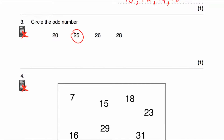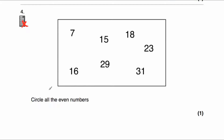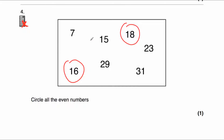Question number four says: circle all the even numbers. We've got this box with the numbers 7, 16, 15, 29, 28, 23, and 31. We've been asked to circle all the even numbers — the numbers that end in either a 0, 2, 4, 6, or 8. So 16 is even, it ends with a 6. And 28 is even as well because it ends in an 8, so we'll circle that. All the other numbers are odd: 7, 15, 29, 31, and 23. So the even numbers are 16 and 28.